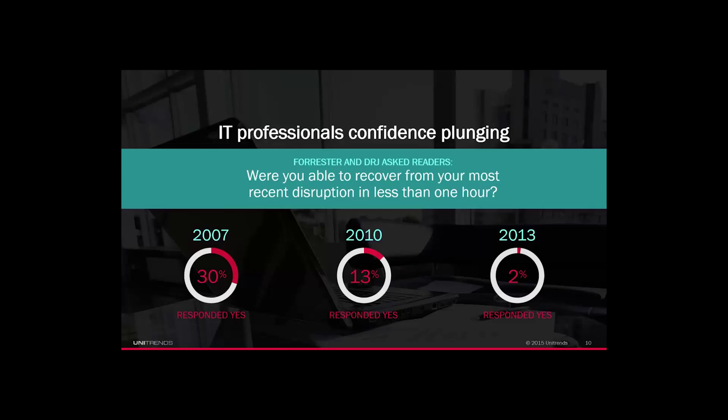Since 2007, IT professionals have been asked if they were able to recover from their most recent disruption in less than one hour. In 2007, 30% said yes. In 2010, that dropped to 13%, and in 2013 it dropped all the way down to 2%. Why? Because data and business requirements in IT are growing rapidly — an explosion of data, an explosion of servers — but the number of folks in IT are not growing nearly as fast, resulting in IT resources that are stretched very thin. Tasks like testing DR environments are frequently skipped, so when disruptions happen, recovery environments don't function as required.